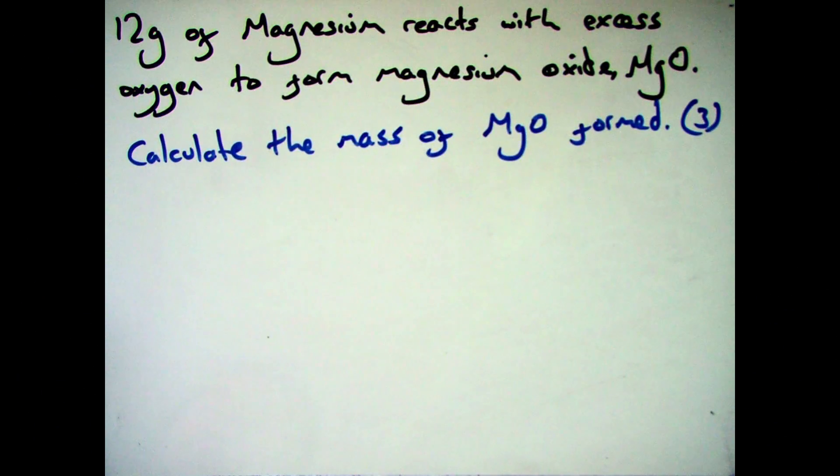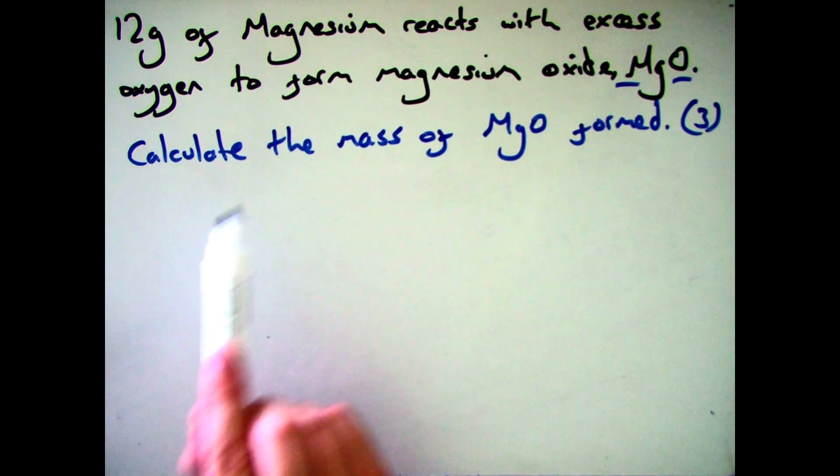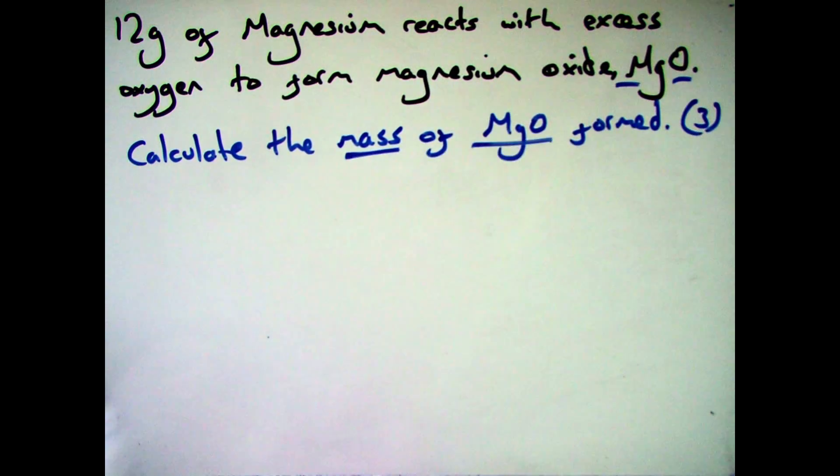So in an exam you might get a question something like this. It says 12 grams of magnesium reacts with excess oxygen to form magnesium oxide, MgO. Calculate the mass of MgO formed and it's worth three marks.